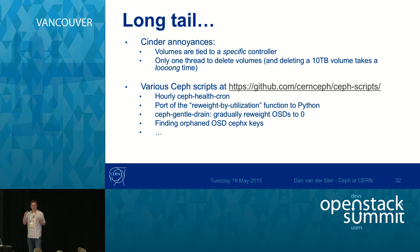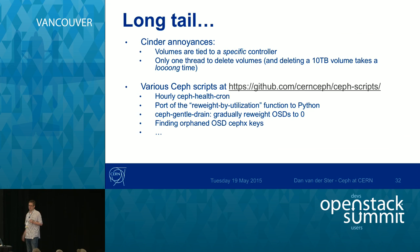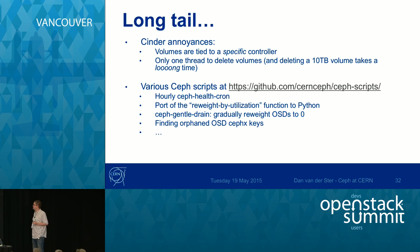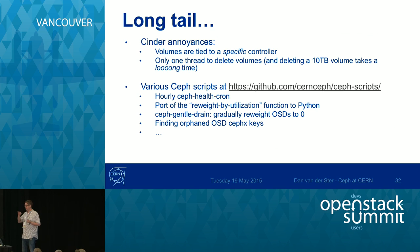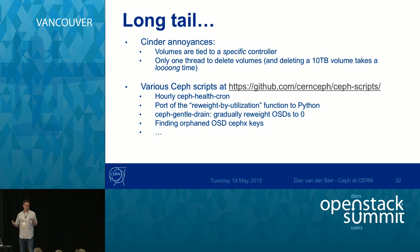Some paper cuts and annoyances: Cinder is annoying in that a volume is associated with a specific Cinder host controller. When we delete volumes, there's only one deletion thread per Cinder controller, so if one user deletes a 10TB volume, it blocks all other deletions for 30 minutes to an hour. Deletion of block devices is faster in Hammer, but we still run Firefly. We've put various operational scripts on our GitHub page, including an hourly health cron job, a Python port of the reweight-by-utilization function, functions to gently drain disks or split PGs, and a script to find orphaned OSD CephX keys.